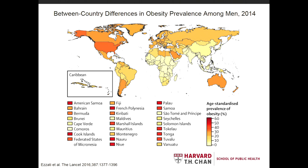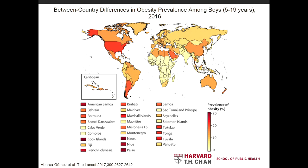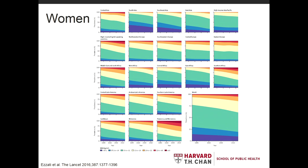There's a much higher prevalence in Sub-Saharan Africa among women compared to men. This is a consistent trend where countries with a lower GDP tend to have higher prevalence among women than men, and that tends to switch as women and men approach each other in terms of obesity prevalence as GDP goes up. The same maps for boys and girls show that prevalence is lower than among adults, but still quite high, including in those Pacific Island countries.